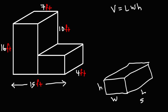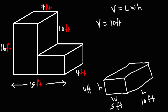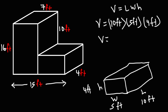So let's say we have a length of 10 feet, a width of 5 feet, and a height of 4 feet. The volume of the rectangular prism is going to be the length — 10 feet — times the width, which is 5 feet, times the height of 4 feet. 5 times 4 is 20, and 20 times 10 is 200. And when you multiply the units feet by feet by feet, you get the volume in cubic feet.